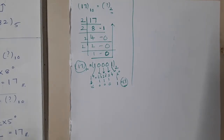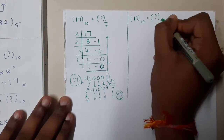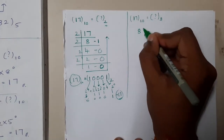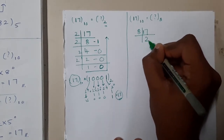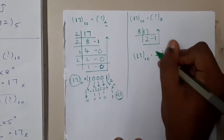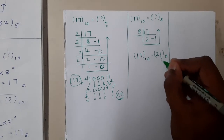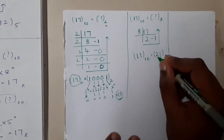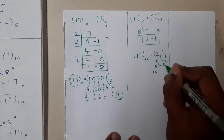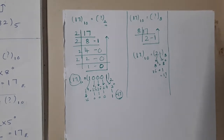Now let us convert 17 base 10 to base 8. Do repeated division by 8: 17 ÷ 8 gives quotient 2 and remainder 1. Reading bottom to top: 17 base 10 = 21 base 8. To confirm: 2×8¹ + 1×8⁰ = 16 + 1 = 17. Correct!